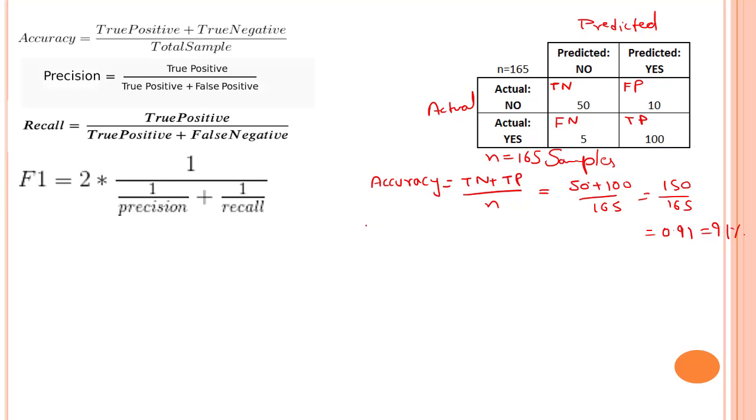Now, just the opposite of it. If anybody says in an interview or someplace, you have to find the error rate. So the error rate is just the opposite of it. That is FN plus FP by your N. So it would be 15 by 165. Let's just create a space. And that will be 0.09. So we have a 9% error rate in our model.